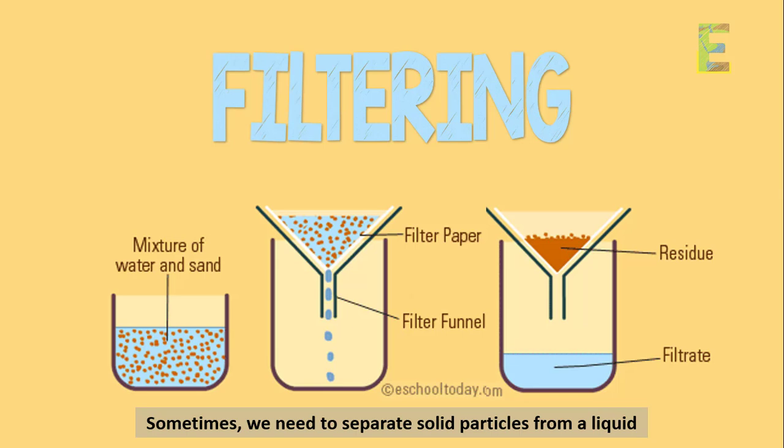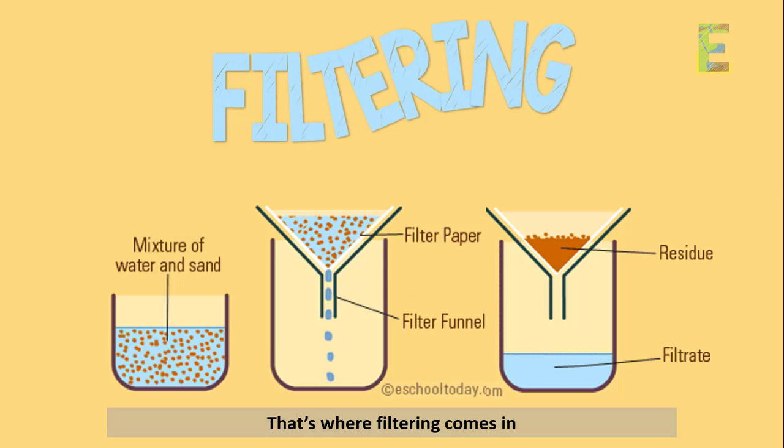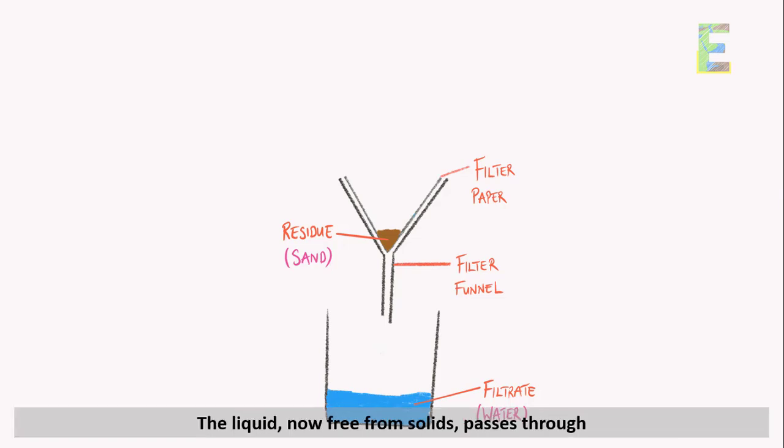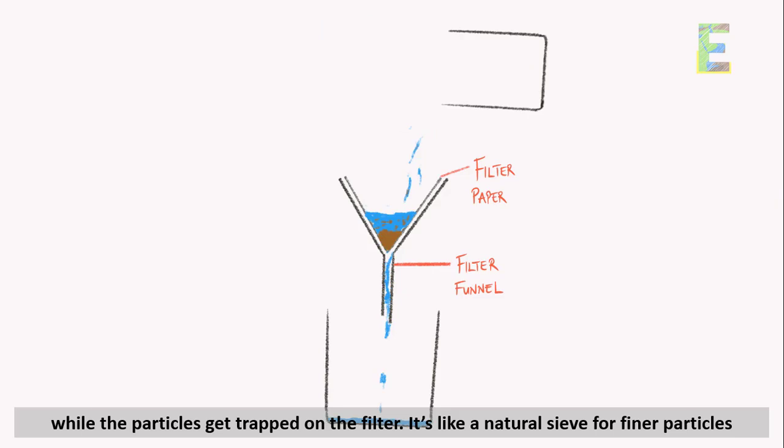Filtering. Sometimes, we need to separate solid particles from a liquid. That's where filtering comes in. Using a filter paper or mesh, we pass the mixture through it. The liquid, now free from solids, passes through while the particles get trapped on the filter. It's like a natural sieve for finer particles.